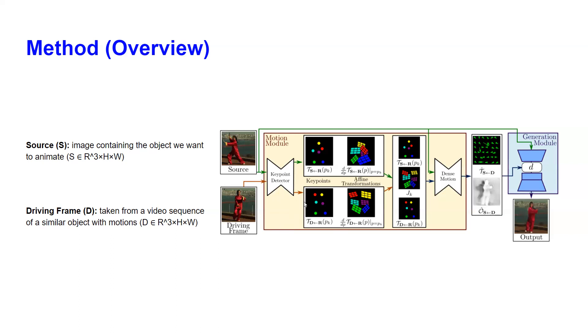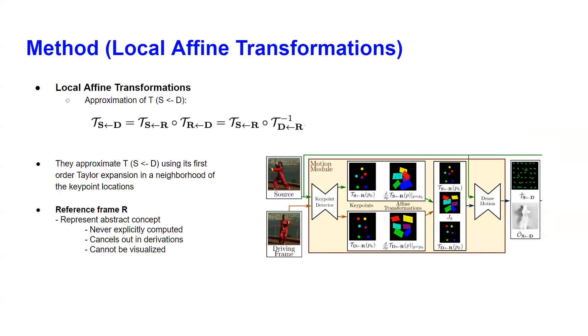Within the motion module, we have two encoder-based architectures. The first architecture is called key point detector, which extracts key points and affine transformations using the driving frame. The next model uses that information to generate dense motion information and the occlusion map. Then the generation module uses that information to reconstruct the final image.